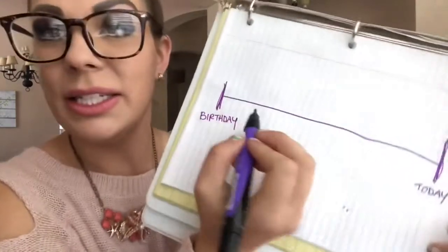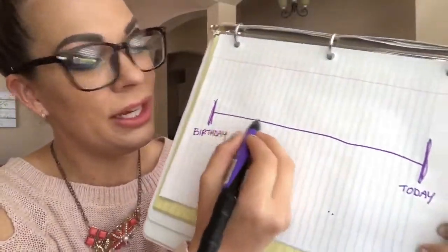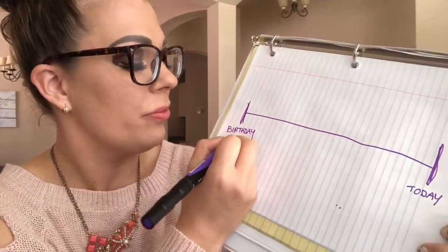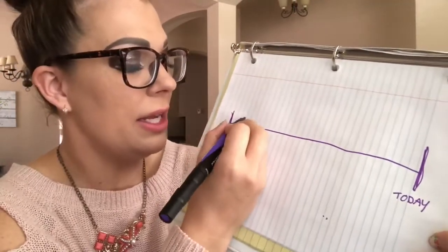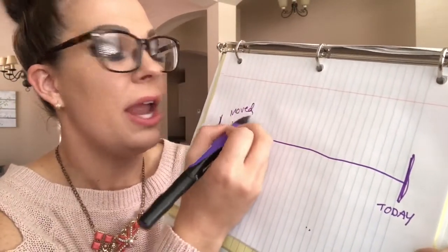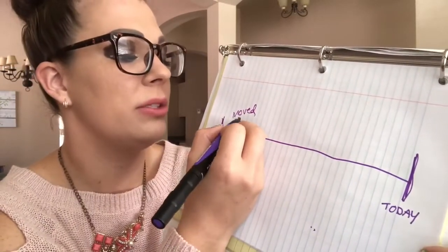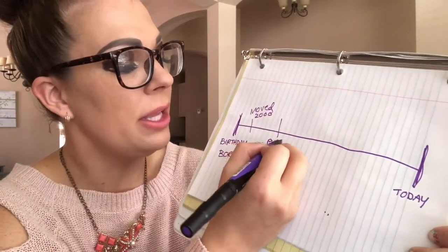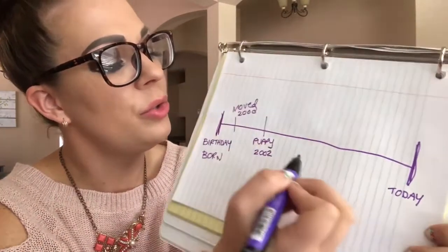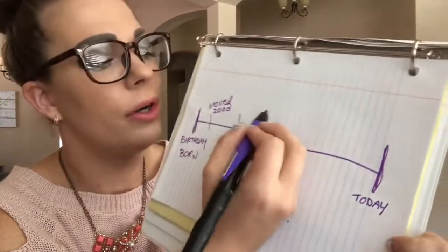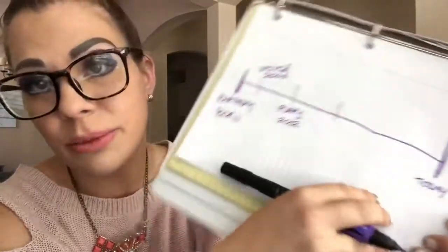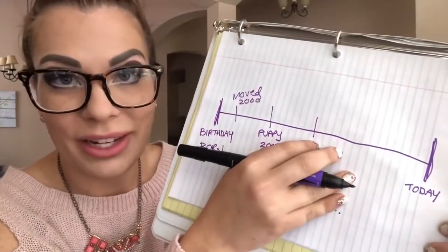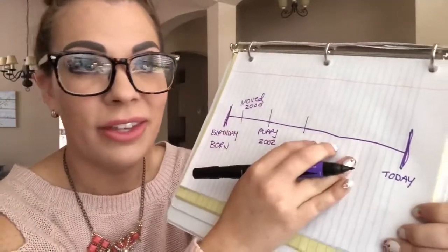Then you put little tick marks for everything in between that you thought was important. So maybe this is the day I was born — very important. Then here I moved, maybe that was 2000. Then here we got our puppy, and that was 2002. Then maybe a parent moved away or got remarried.